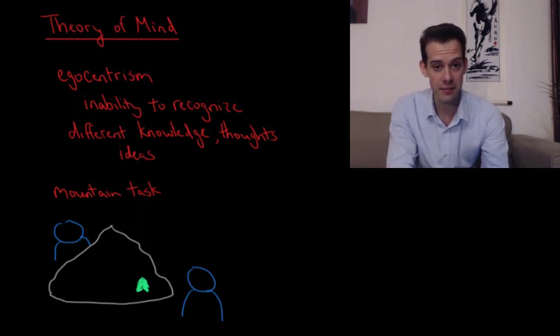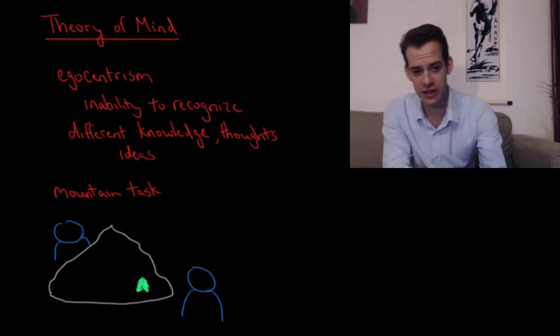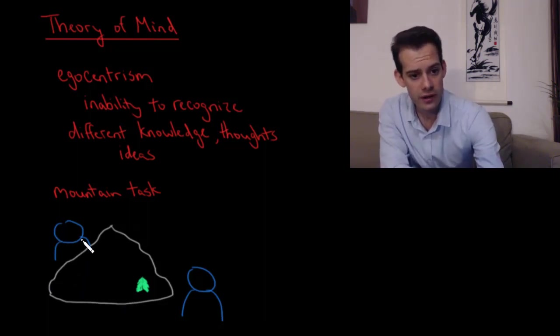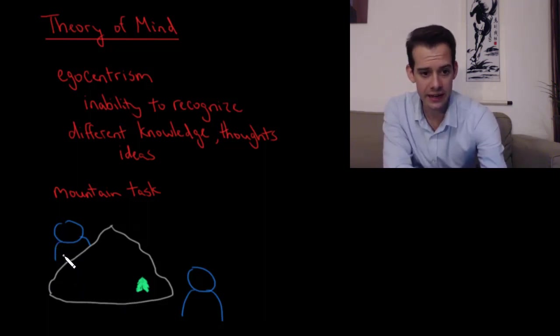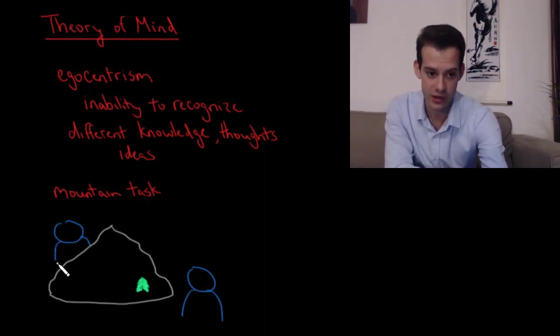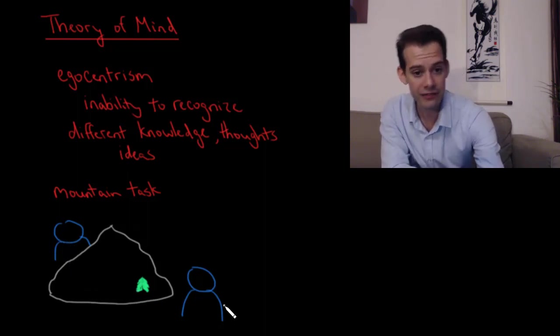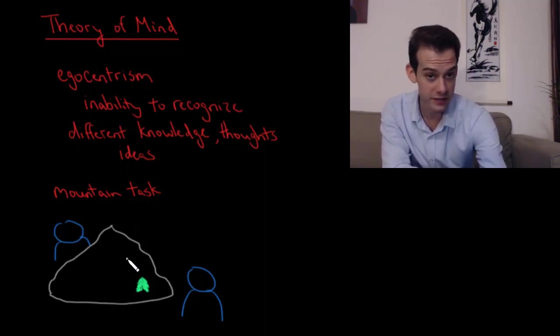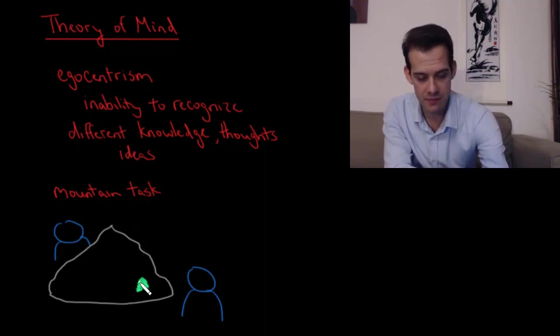One way that Piaget demonstrated this was through a mountain task where he had a model of a mountain on a table. The child would first go to one side and tell what they could see from that side. In this case, from this side, the child isn't able to see this tree over here. If you're standing on one side of the mountain, you can't see the tree. But if you're standing on the other side of the mountain, then you can see the tree. The child would get experience seeing these different viewpoints of the mountain.